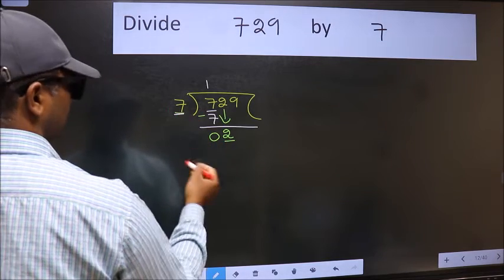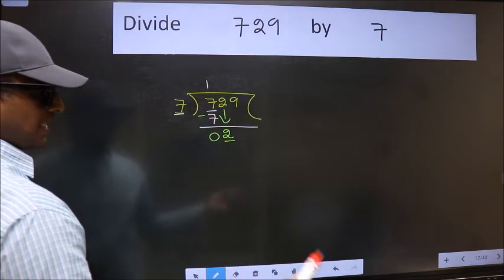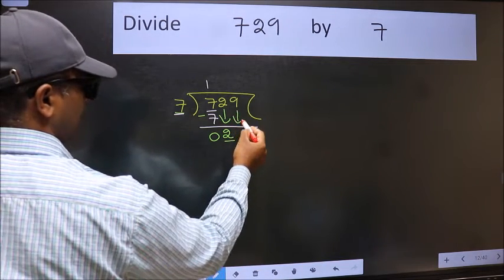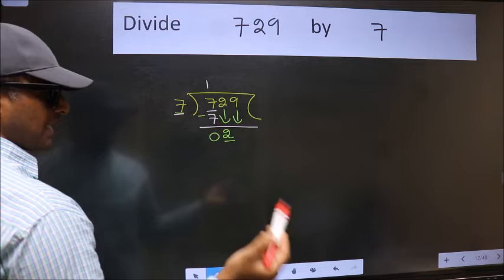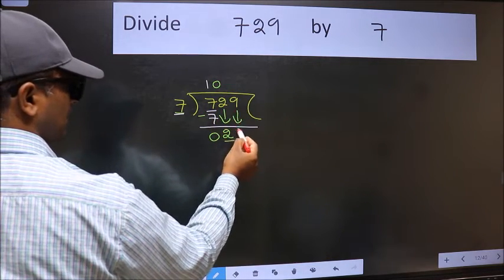Now here we have 2 and here 7. 2 is smaller than 7, so we should bring down the second number. And the rule to bring down the second number is we should put 0 here, then only we can bring this number down.